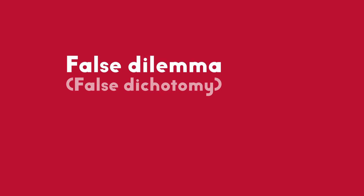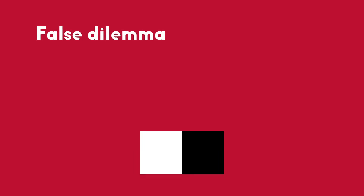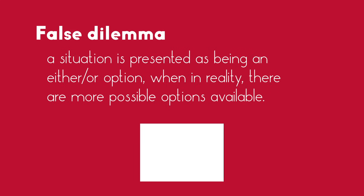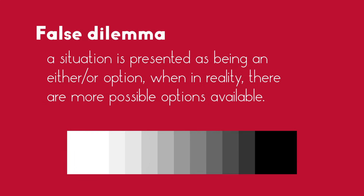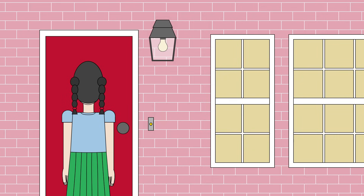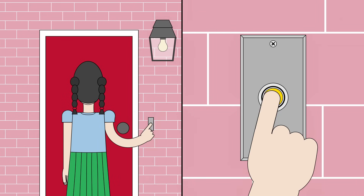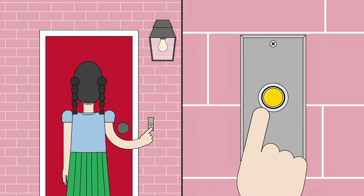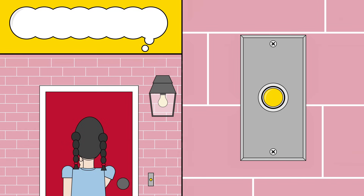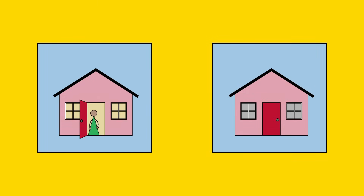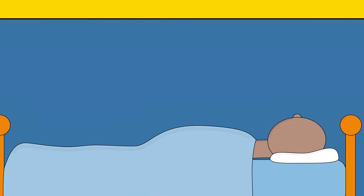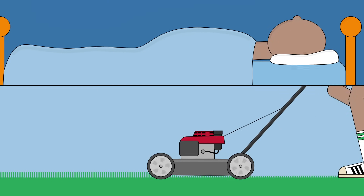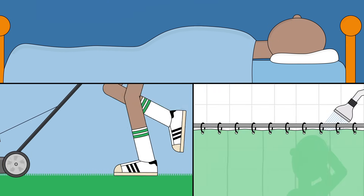The false dilemma, or false dichotomy, is a logical fallacy where a situation is presented as being an either-or option when in reality there are more possible options available than just the chosen two. Rebecca rings the doorbell, but Ethan doesn't answer. She then thinks, oh, Ethan must not be home. Rebecca posits that either Ethan answers the door, or he isn't home. In reality, he could be sleeping, doing some work in the backyard, or taking a shower.